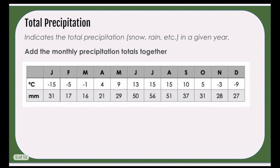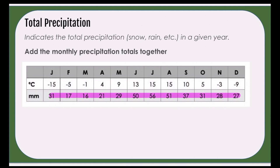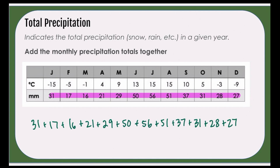For total precipitation, we're going to add up all of our precipitations from January to December and get a total. So we're going to take 31 plus 17 plus 16 and on to get our total. Once we have all of our calculations in, we add them up, and our total is going to be 394. In this case, our unit of measurement is millimeters. So 394 millimeters is our total precipitation for this location.